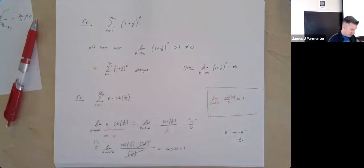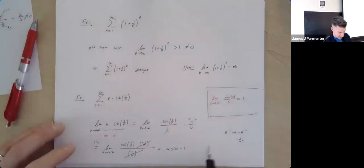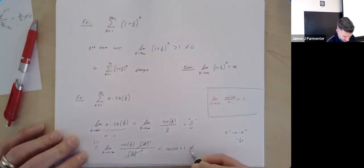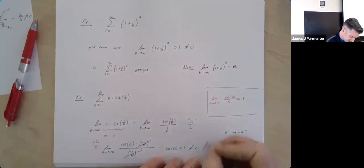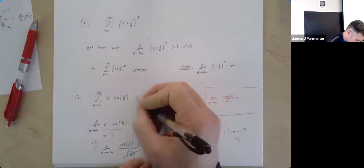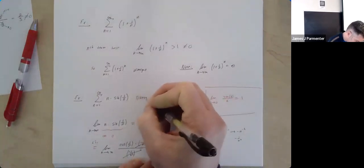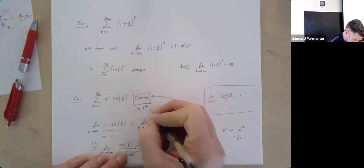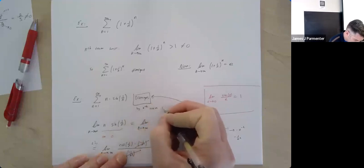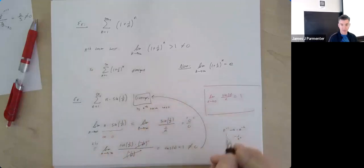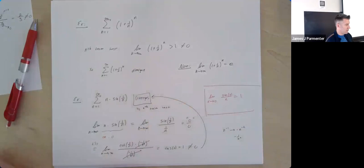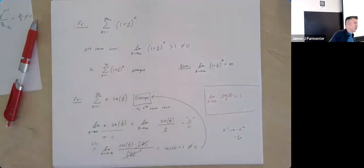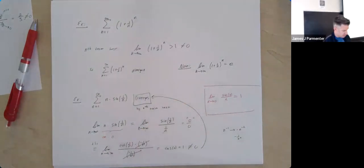Since this limit equals 1, which is not 0, the series N·sin(1/N) diverges by the N-term test. I'd encourage you to get in the habit of stating the test you're using — it diverges by the N-term test, or it converges by the ratio test, or it diverges by the integral test. We'll talk about all of them.